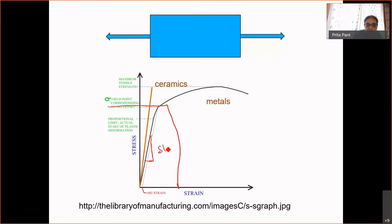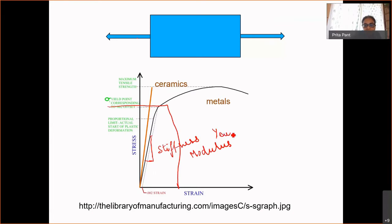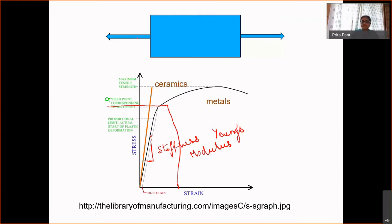This is the stiffness, and the engineering term for it is modulus — to be very precise, it is Young's modulus, after Mr. Young who was a materials scientist. So this is the Young's modulus. Higher the slope, the stiffer the spring. High slope meant for cars, low slope meant for your ballpoint pens.